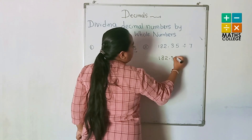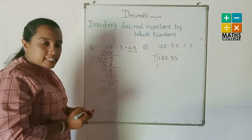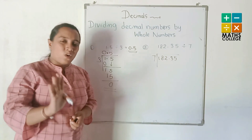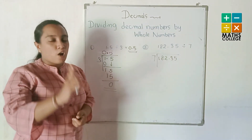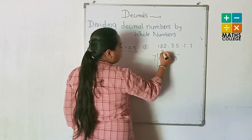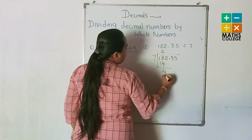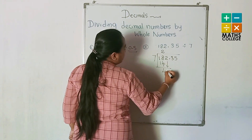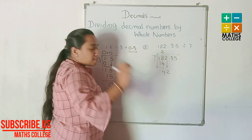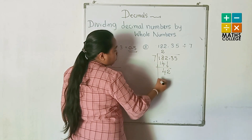Next example: 182.35 divided by 7. Consider 1 — no 7s in 1. Consider 18 — two 7s. Write 2. 2 multiplied by 7 is 14; remainder is 4. Bring down the 2, making 42.